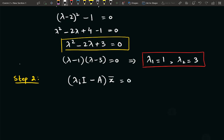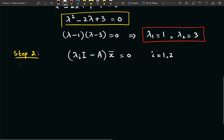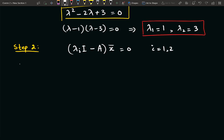So here i is equal to either 1 or 2. So we will be putting one eigenvalue at one time to compute a single eigenvector. So first of all, let us put the first eigenvalue, which was λ₁ = 1.